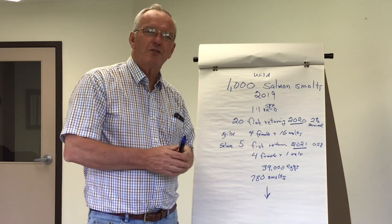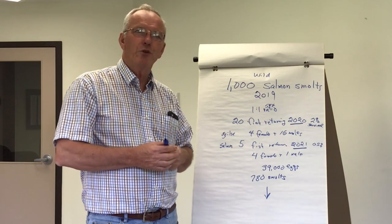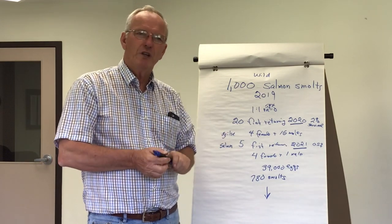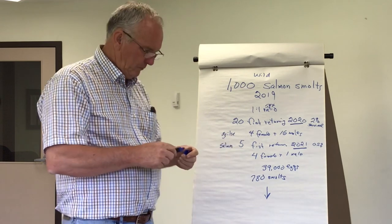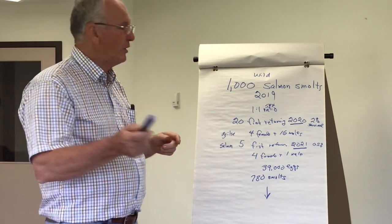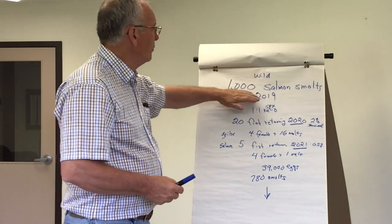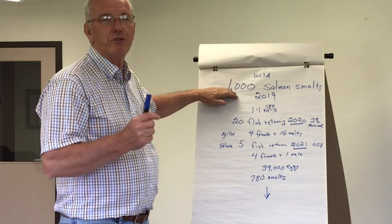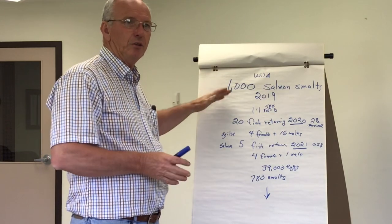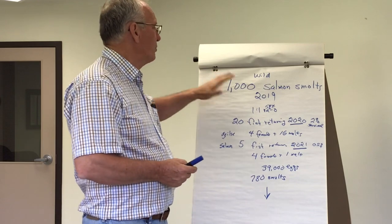So what could the SAS program produce in the way of numbers of fish? This is just a rough calculation, but if we start out with a thousand smolts leaving the Northwest Miramichi in 2019...